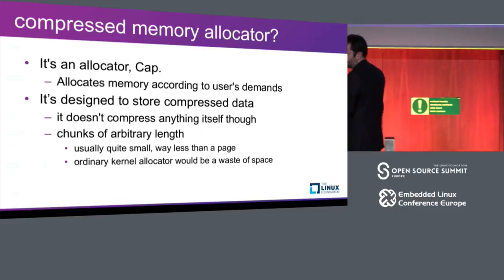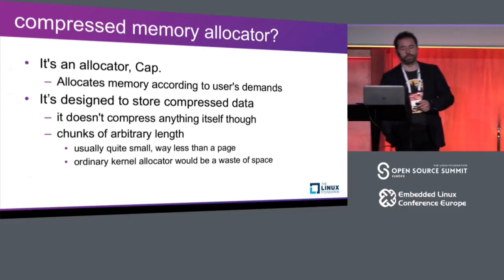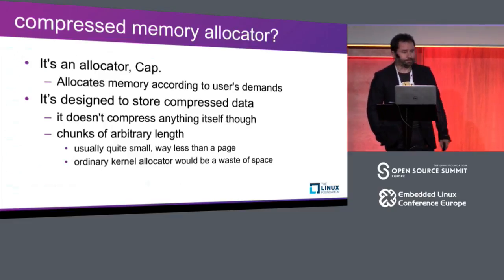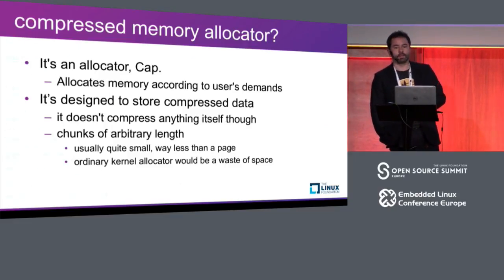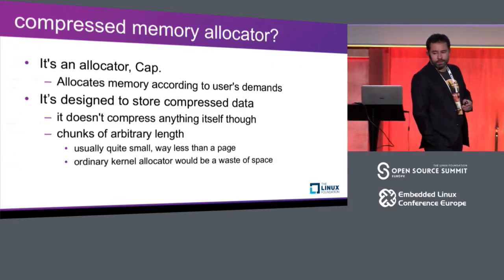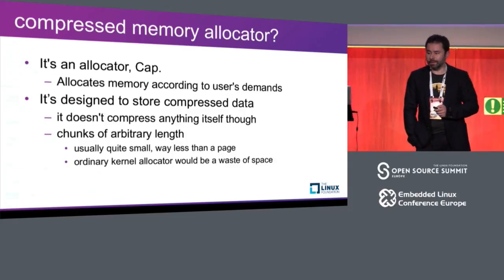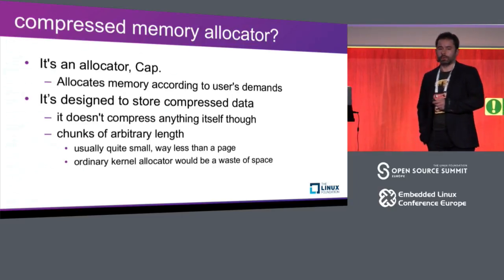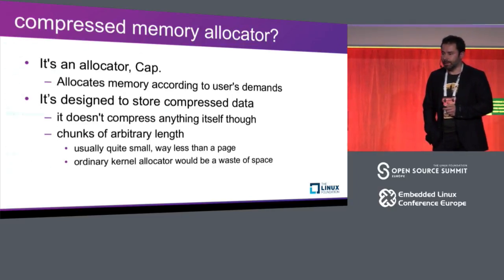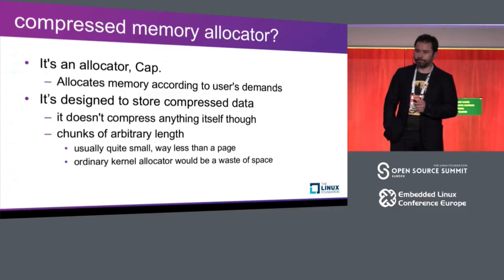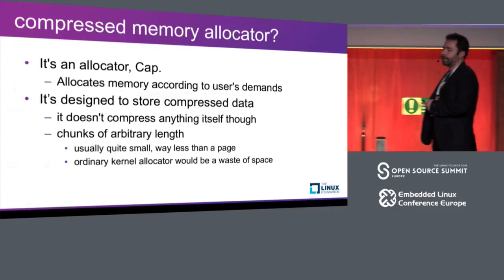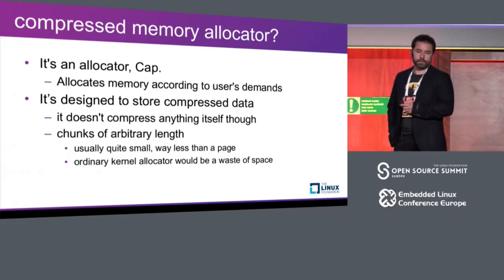Then comes such a thing as a compressed memory allocator, which allocates memory. The key thing is that such an allocator is designed to be able to store small data objects less than a page. And then we get the real benefit from the pages being compressed.